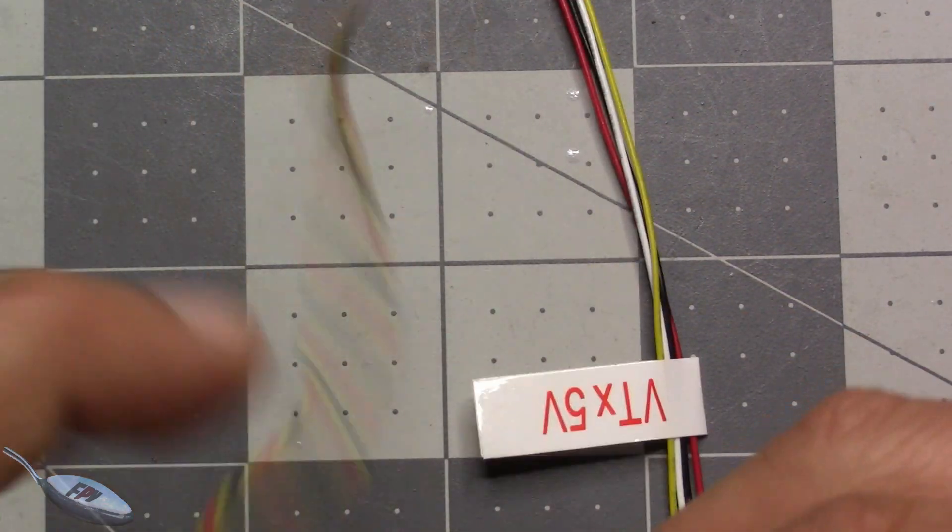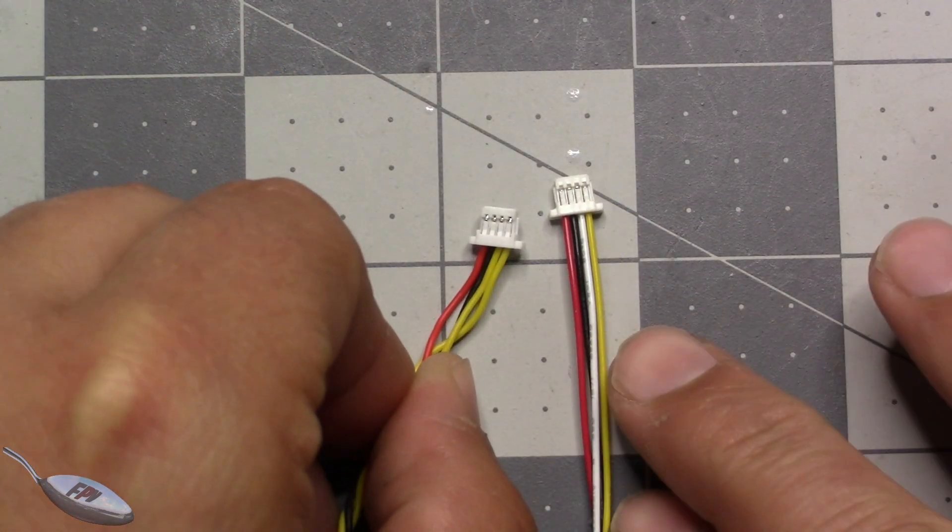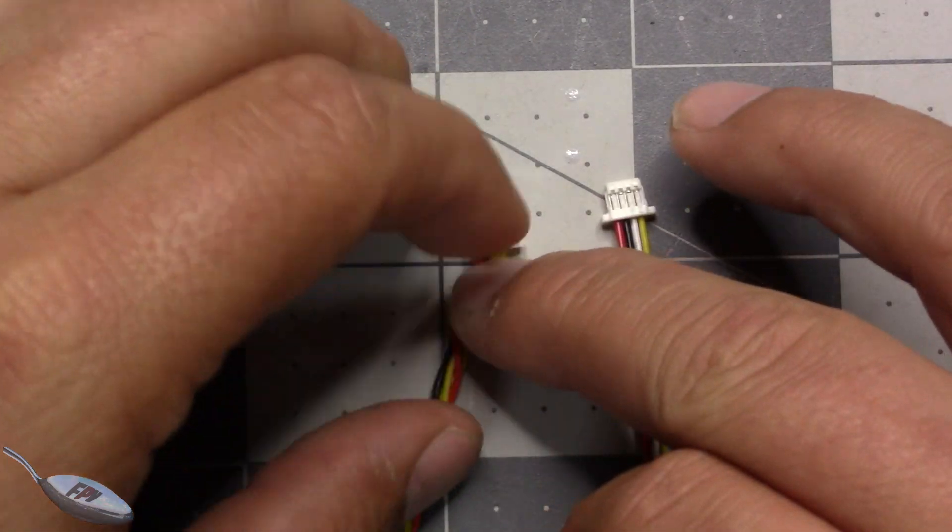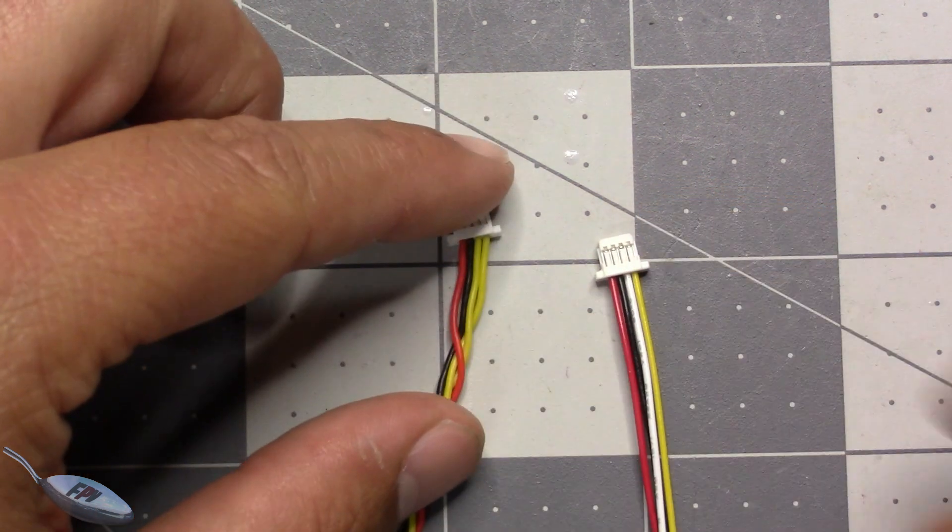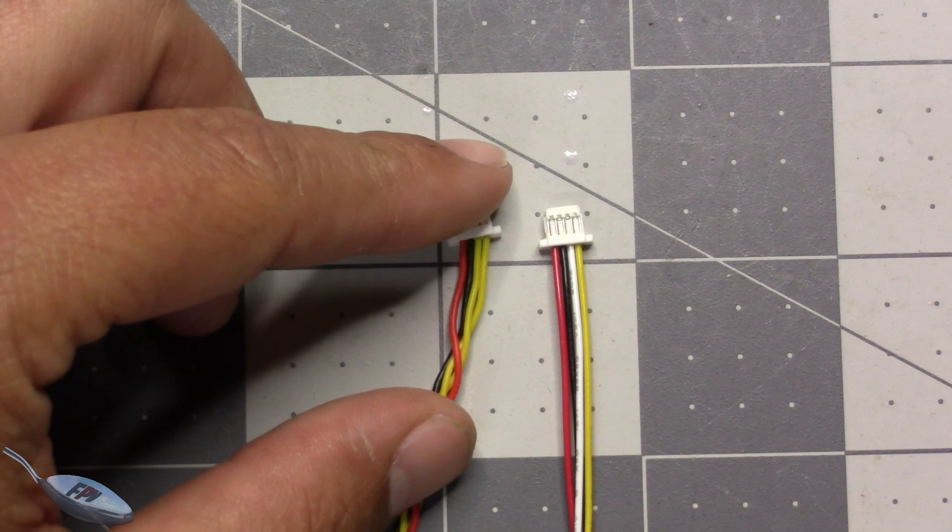And I've already done this end, so you can see that this end is correct. So you have to do this to both ends. Well actually, you don't have to do it to both. You have to do it to the end that you're going to use because I'm going to cut it in the middle and direct solder to the board.